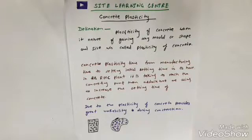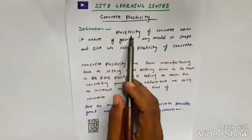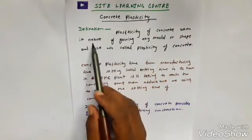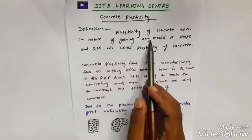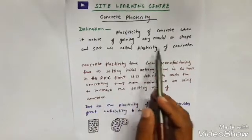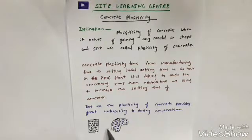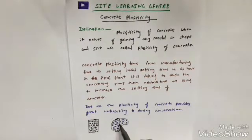First let's start with the definition. The plasticity of concrete is its nature of gaining any mold or any shape and size — that is called plasticity. As you can see here, I have drawn small images: this is a rectangle shape, and this is another shape. So it's called plasticity.